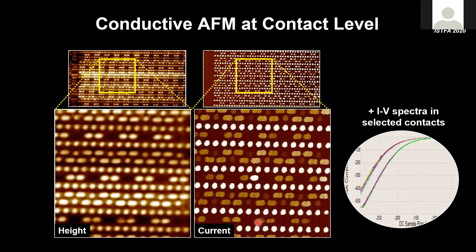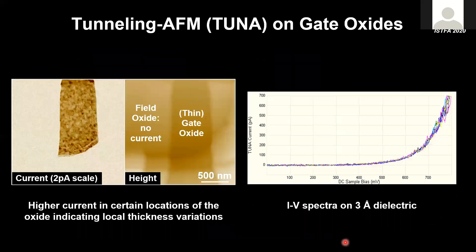If that device has leakage, shortage, or high resistive contact, those things will show up in the current map. In addition to the current map, we typically also position the AFM tip onto several tungsten plugs and collect IV spectra to learn more about the device below. There are two types of IV curves corresponding to two types of contact, indicating a difference in resistance to the device below.